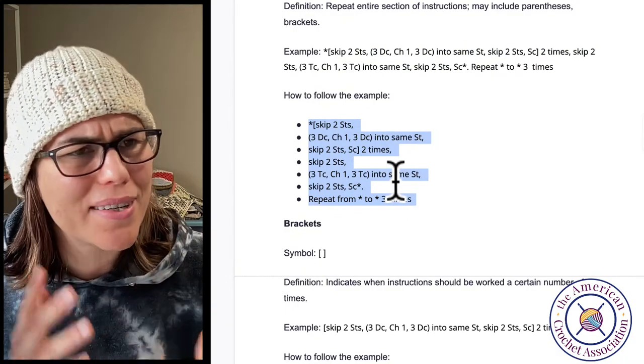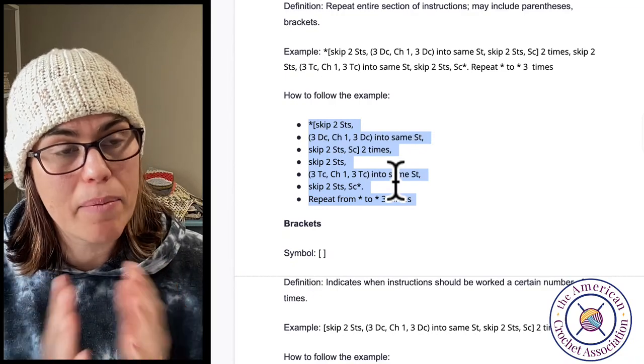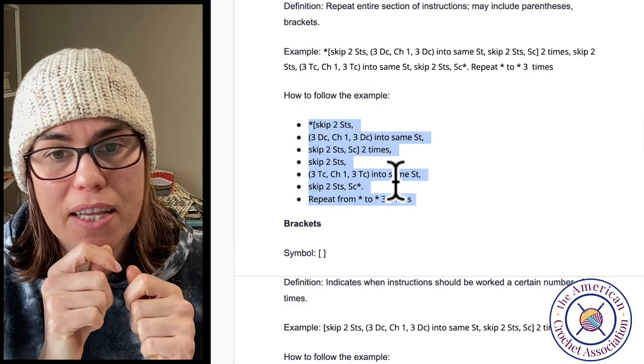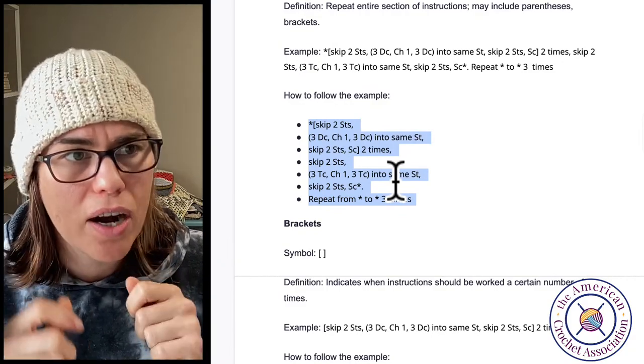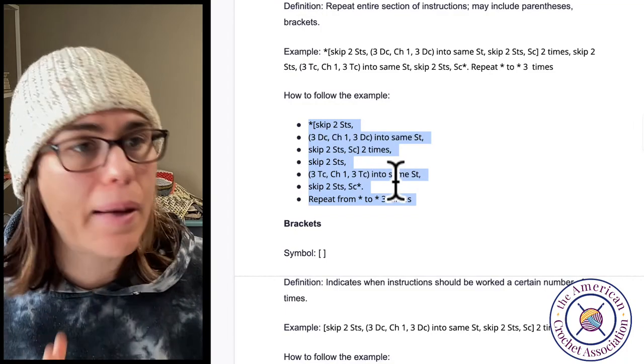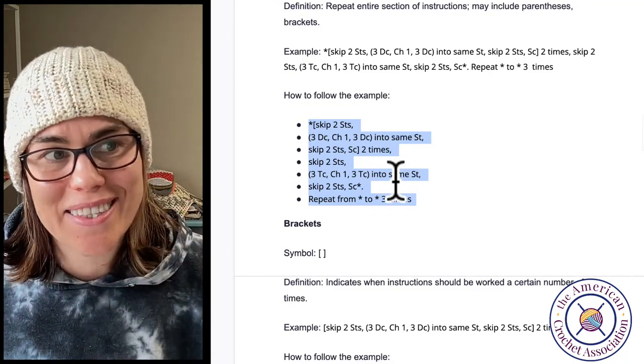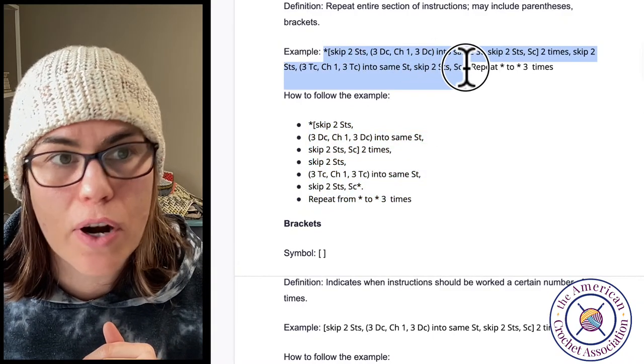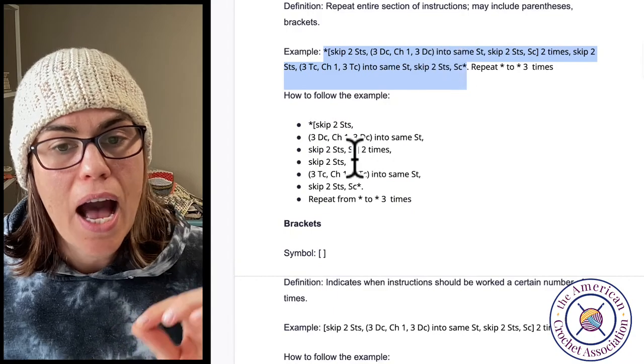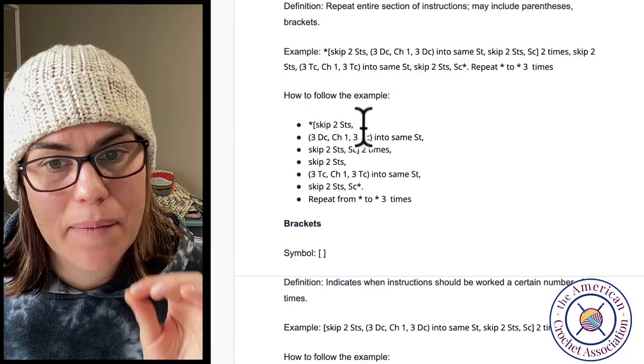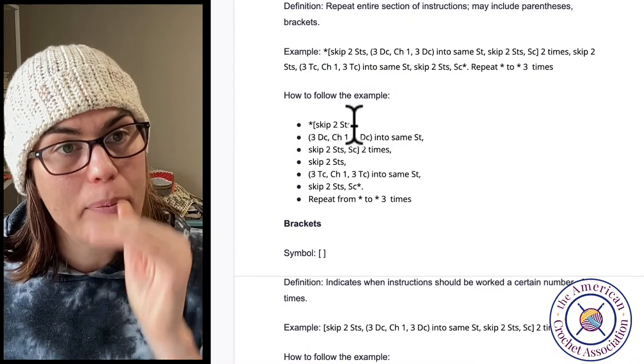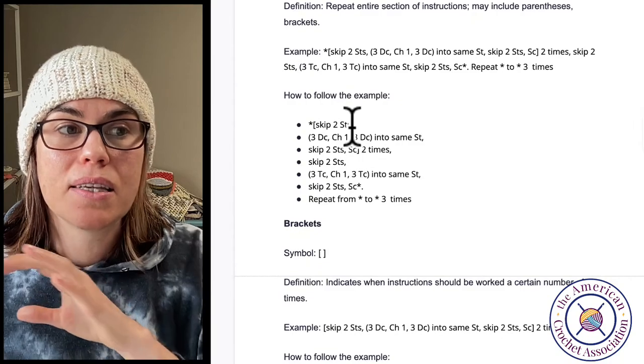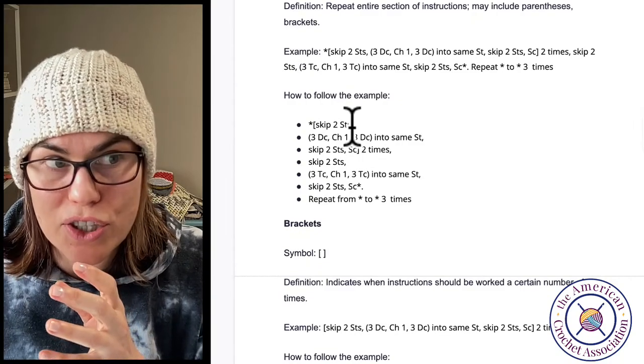What I think you need to do to really fully understand this is to break out each one of those pieces of instructions into its own separate line. This is the way my brain works. So all I've done is taken this line of instructions from asterisk to asterisk, and I pasted it down here, and anytime there was a comma, I put it in a new line.